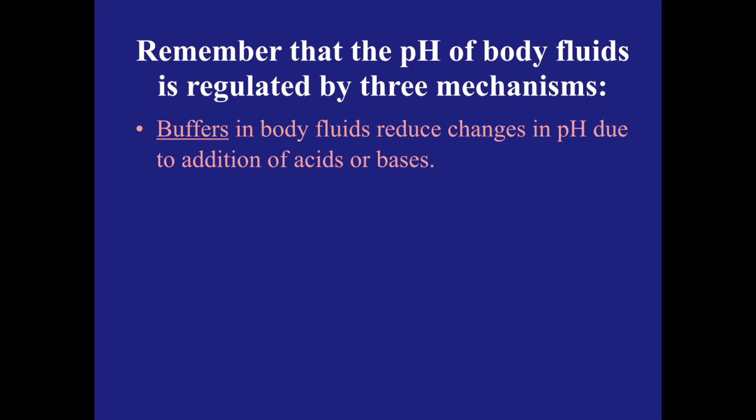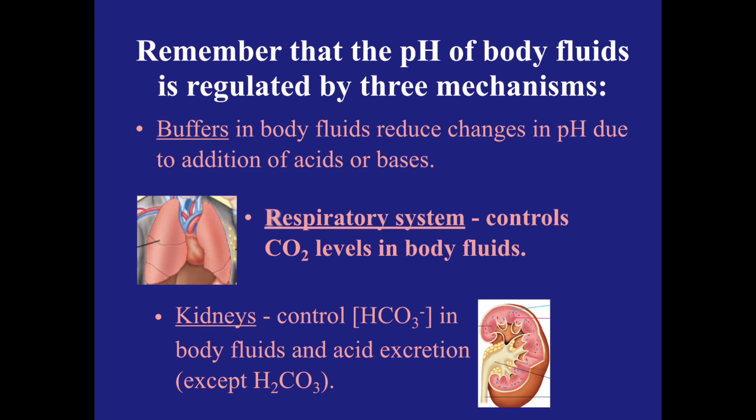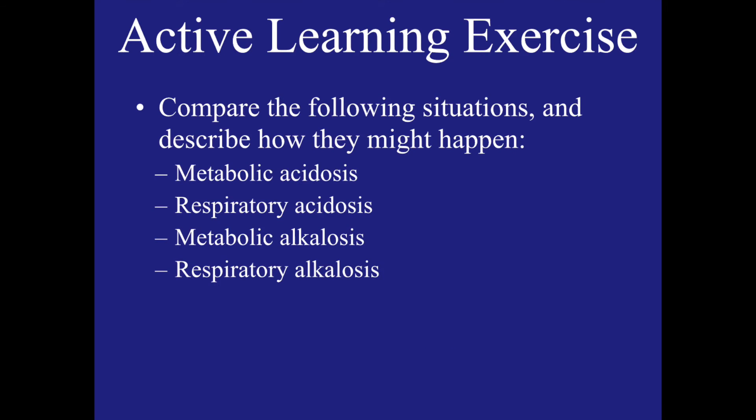Just to review, remember that the pH of body fluids is regulated by three mechanisms: first, buffers in body fluids that reduce the changes in pH due to an addition of acids or bases; then the respiratory system, which controls CO2 levels in body fluids; and last of all the kidneys, which control bicarbonate in body fluids and acid excretion. Take some time to describe to yourself or to a friend how these different situations might happen.